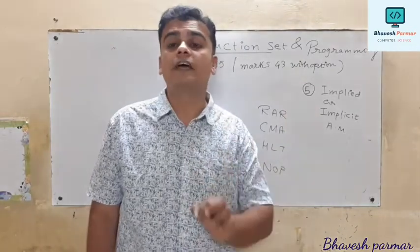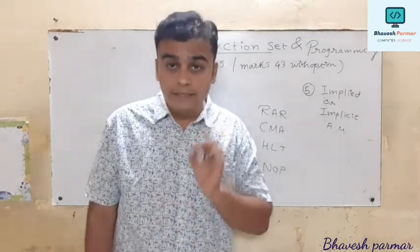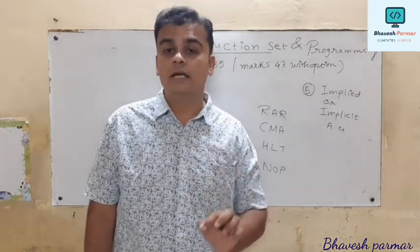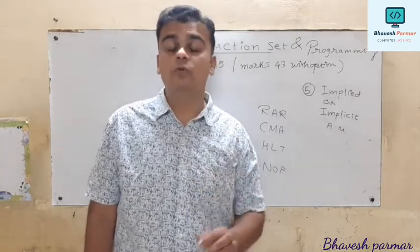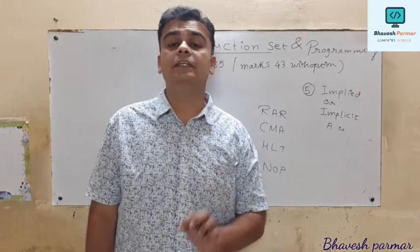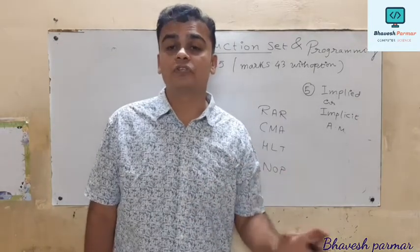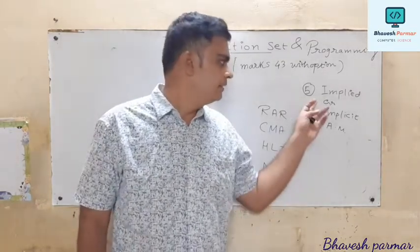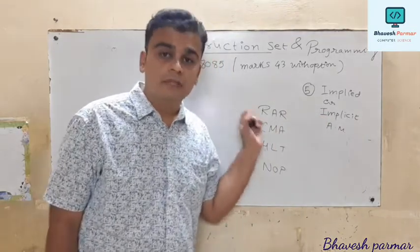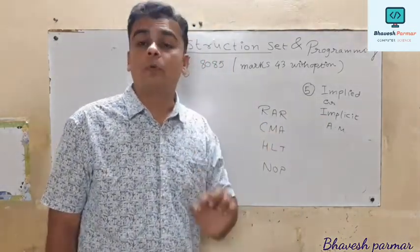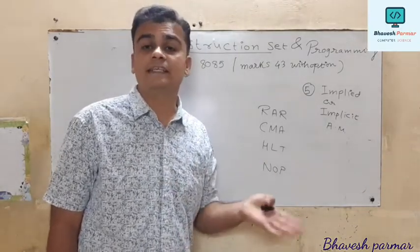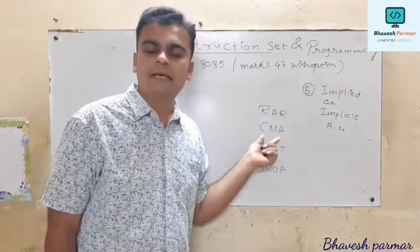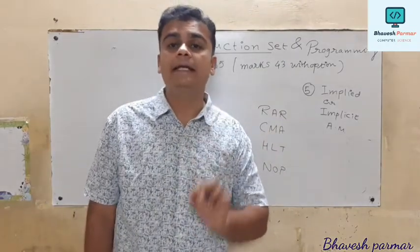We have now discussed all 5 addressing modes. To summarize implied/implicit addressing mode: opcode appears but operand is invisible or hidden. That is why it is called implied or implicit addressing mode, and this type consists of a 1-byte instruction.